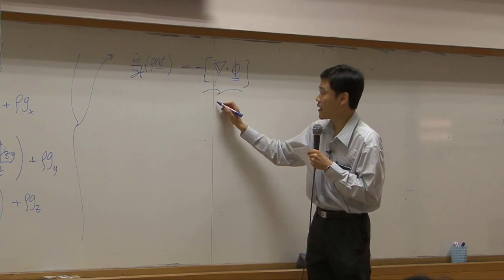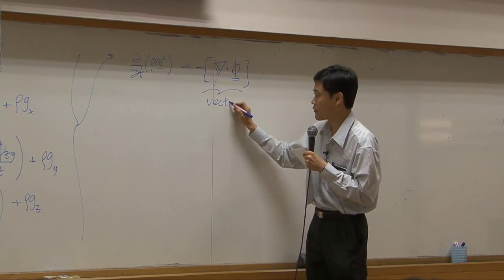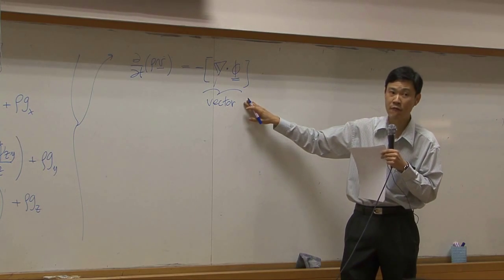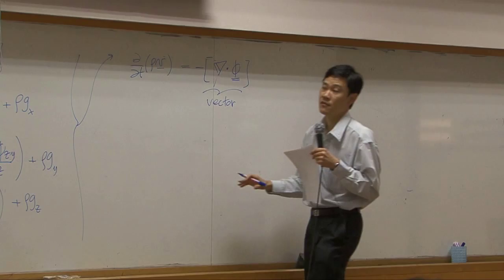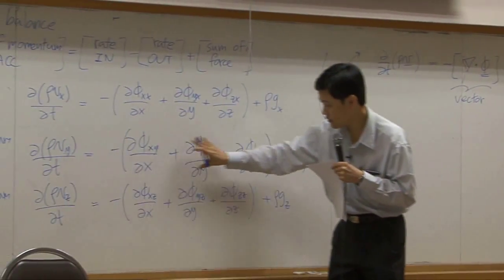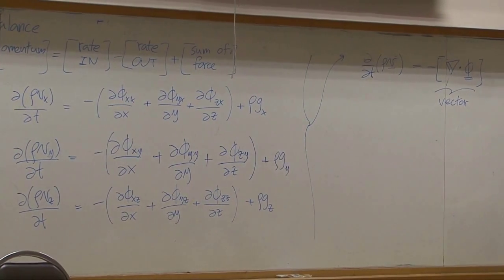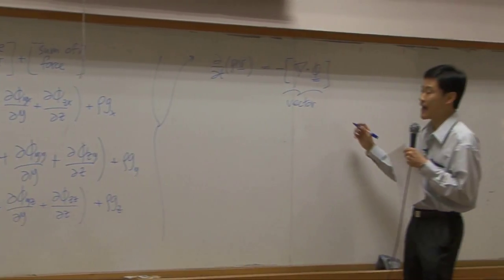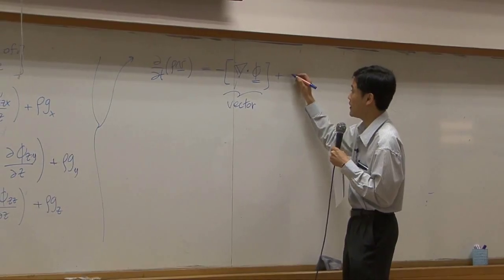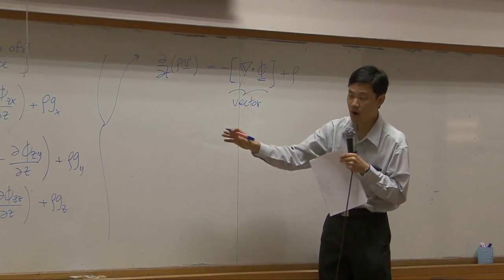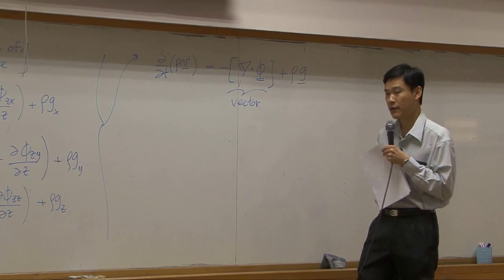So these two combines, you get a vector. This vector is consisting of three components. The first component is here. This is second component and third component. Last term would be rho, which is scalar, and then gx, gy, gz can be combined into another vector.